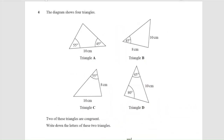These diagrams show four triangles. Two of the triangles are congruent — write down the letters of the two triangles that are congruent. So if we look for the most straightforward one, we look at two sides.